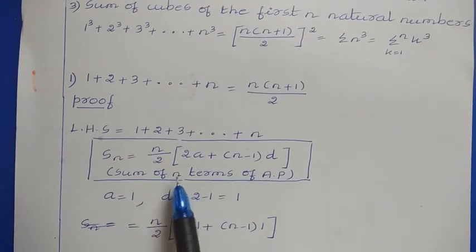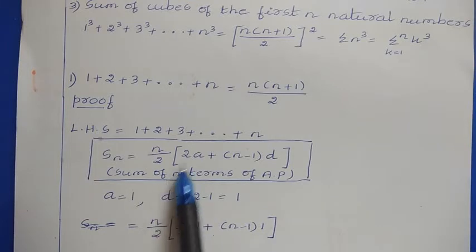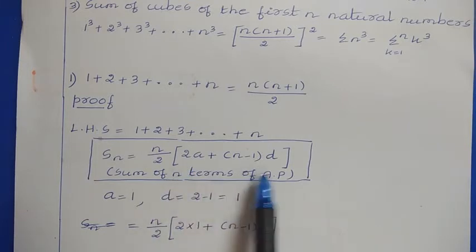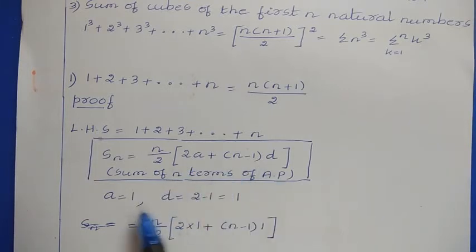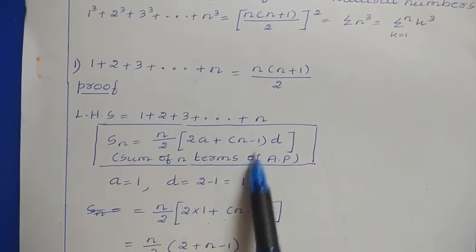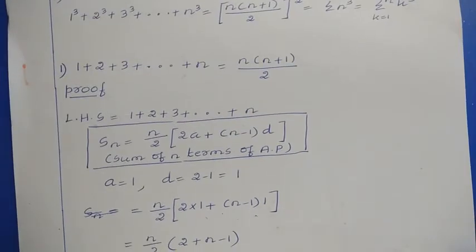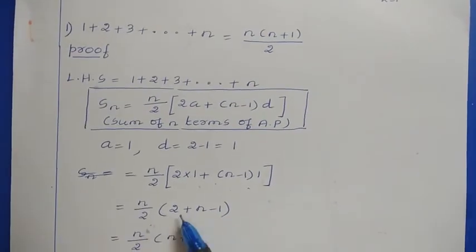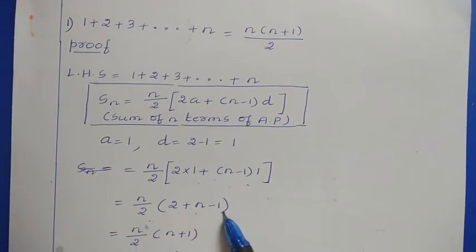That is, Sn equals n divided by 2 times 2a plus n minus 1 into d. In this formula, substitute a and d values. The first term is 1 here and the common difference is also 1. So n divided by 2 into 2 into 1 plus n minus 1 into 1, that is n divided by 2 times 2 plus n minus 1. So 2 minus 1, that is 1.